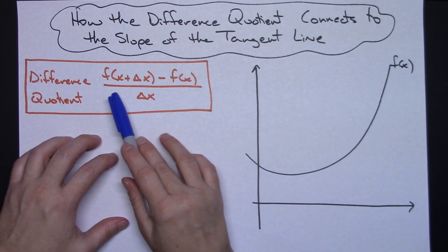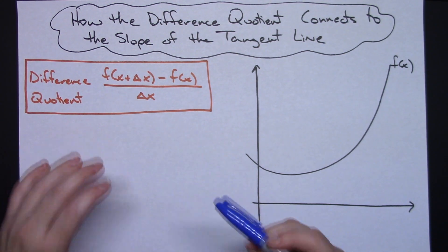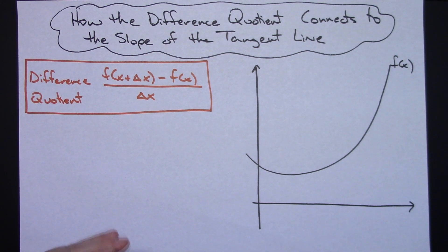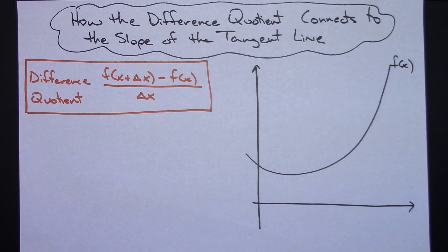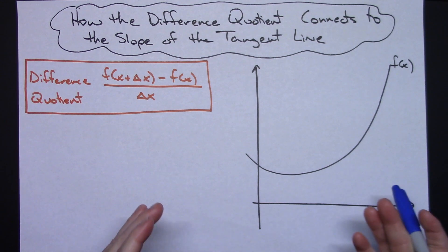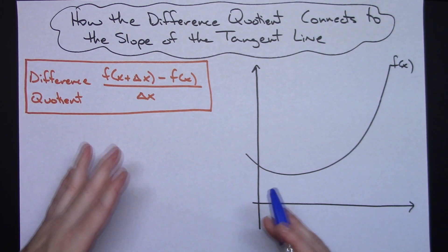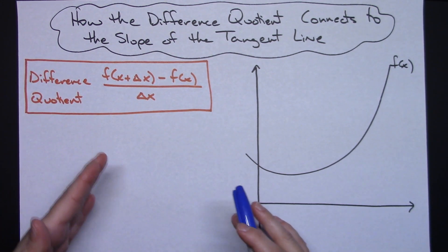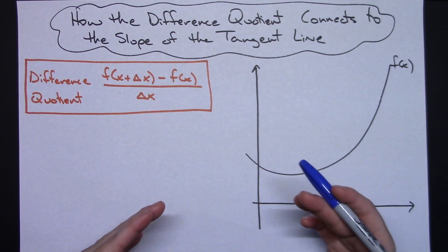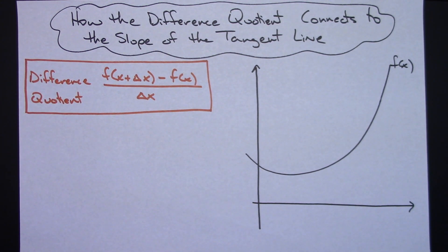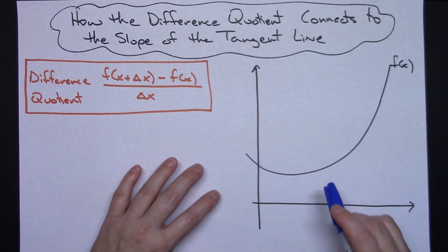I'm going to use the x plus Delta x version just because I'm doing this as we're going to lead into the derivative, into calculus. That's why I've chosen this one. Regardless, the difference quotient is something that you work with a lot and they don't really tell you where it comes from — they just kind of say here's the difference quotient, and here's how you simplify it.